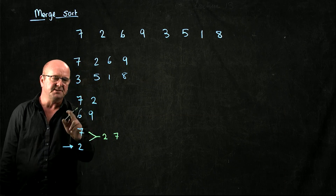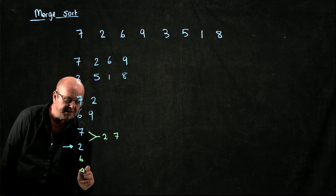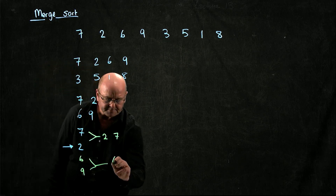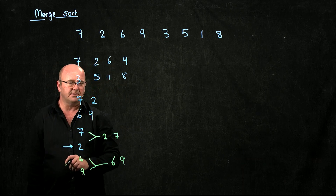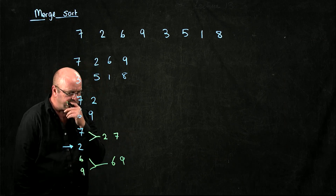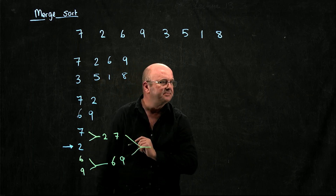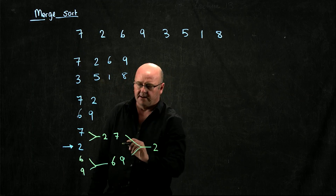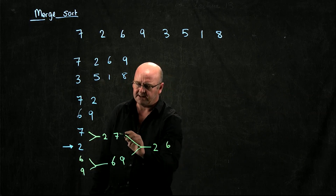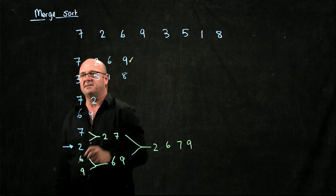But when we made that promise, we also promised that we would sort the six and the nine. We know how to do it now. So if we take the six and the nine, we divide them in two. Now my six is sorted, my nine is sorted, everybody's happy. All I've got to do is put them back together, compare the six and the nine, and they go back into order. Now when I join these two, I compare the two and the six — the six is smaller. I compare the six and the seven — the six is smaller. I compare the seven and the nine — the seven is smaller. And now I've got the nine. So I've sorted this half of the list like I said I would.